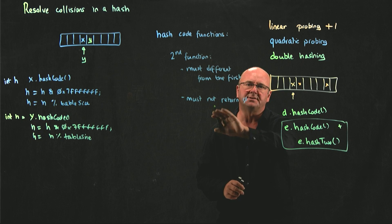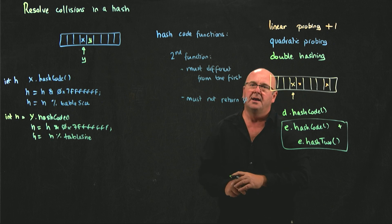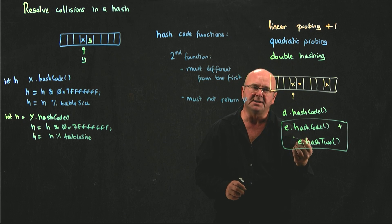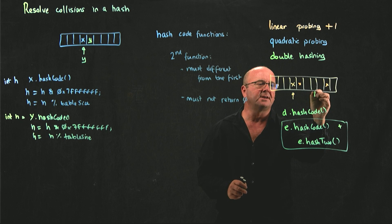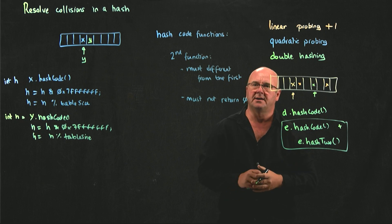we add together the numbers from our two hash codes, that's why we must not return zero, and we use the result of that addition to identify the location in the table where our element has to go.